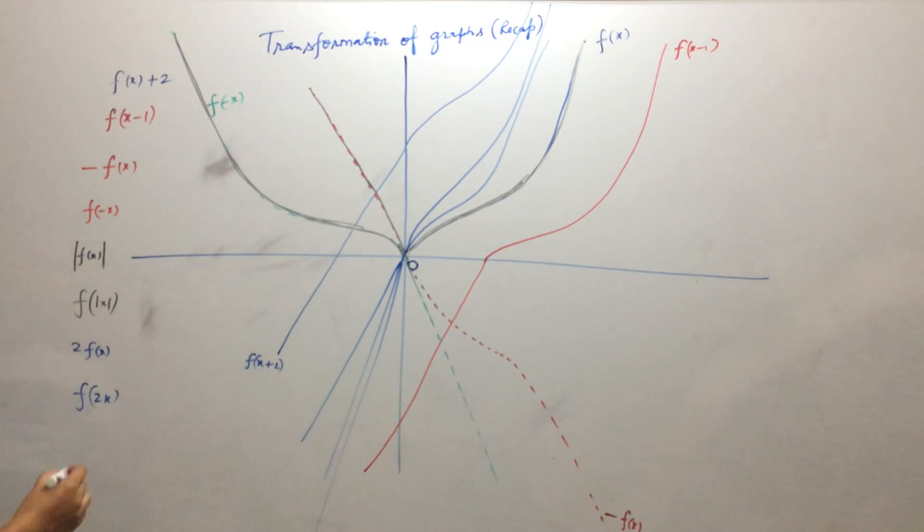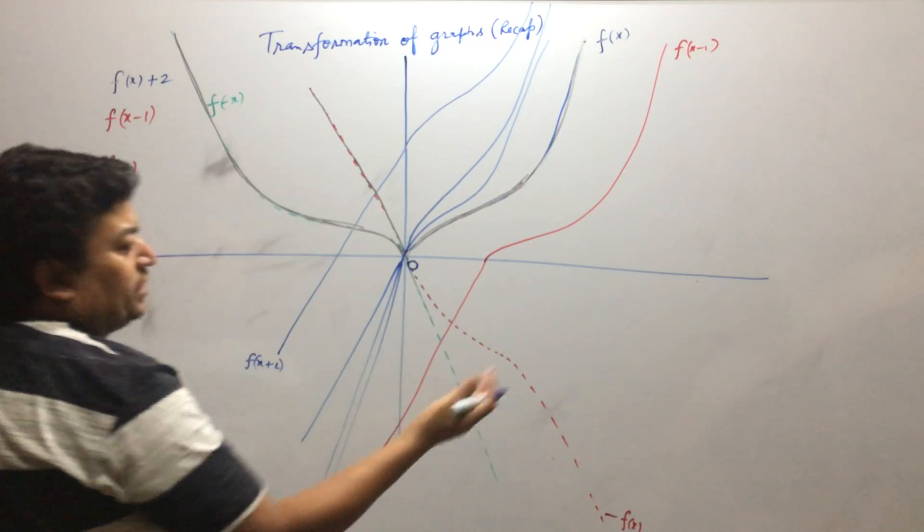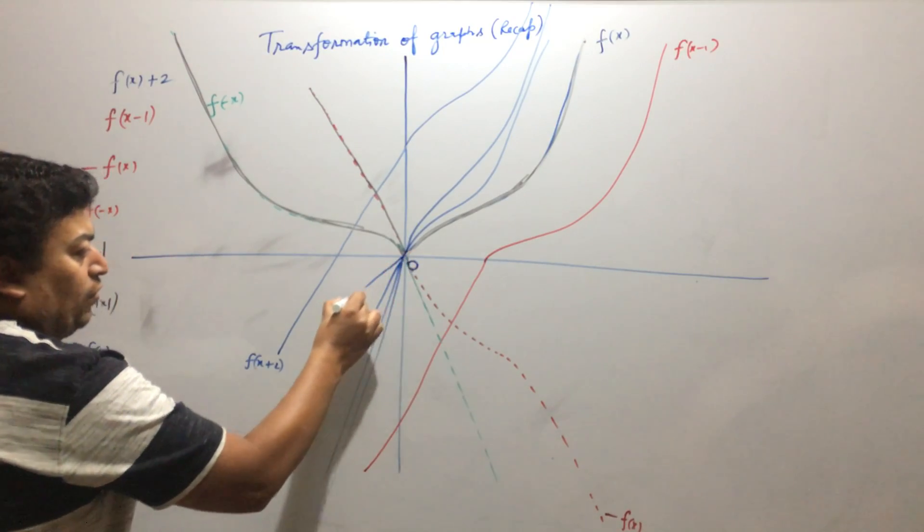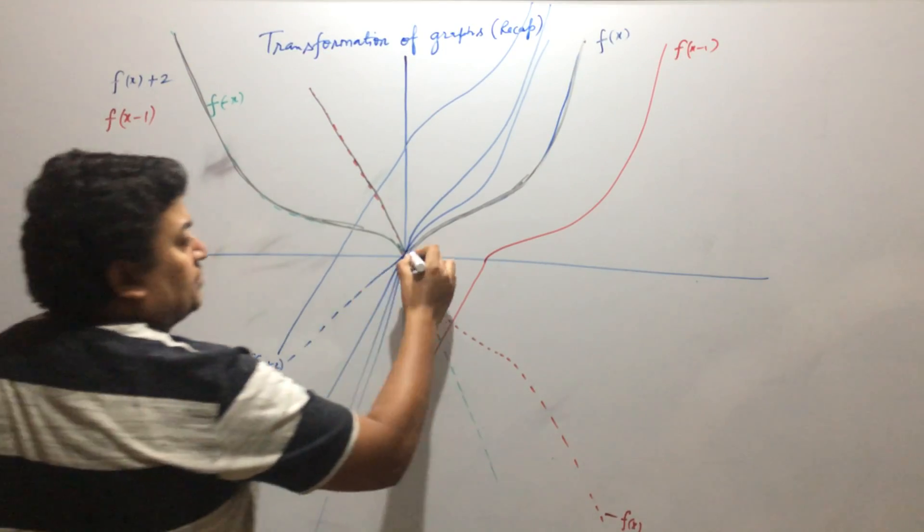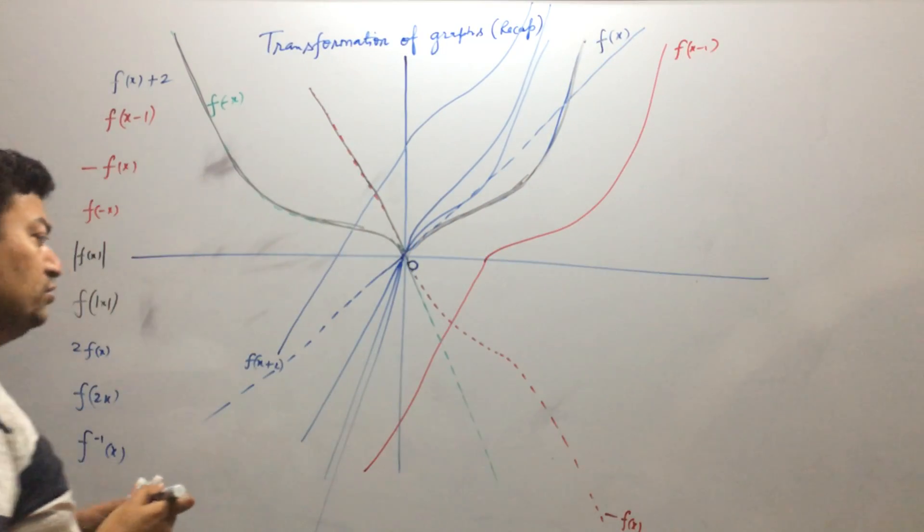Now suppose you have to draw a graph of f inverse x. That's a very crowded graph but I can just tell you that you draw y equal to x line and then take the mirror image with respect to this line.